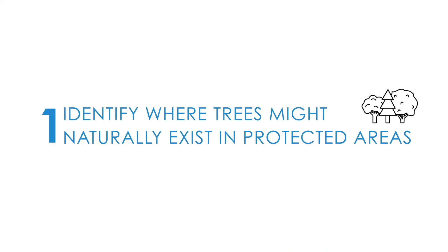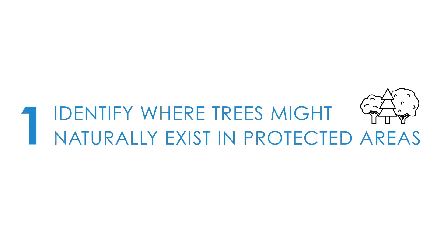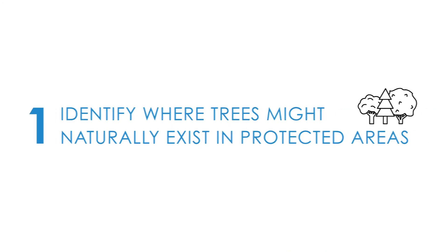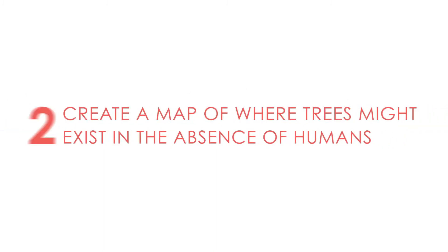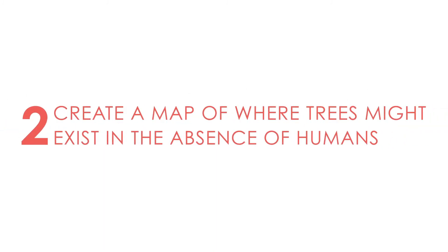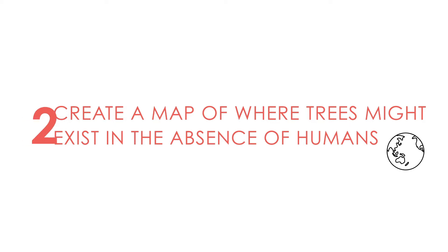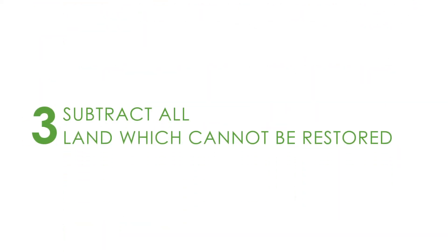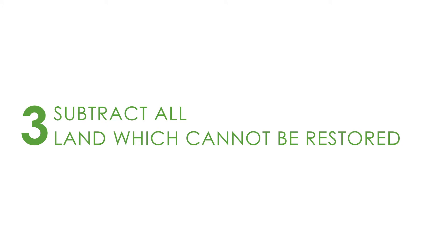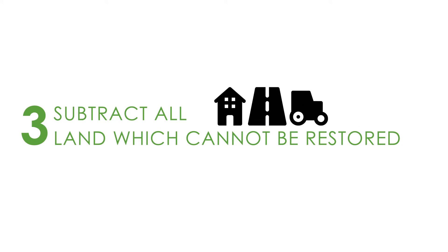Ultimately, it's a three-step process. First, we identify where trees might naturally exist in the protected areas. By characterizing those ecosystems, we generate a global map of where trees could potentially exist in the absence of humans. And then, ultimately, we subtract away the areas that we cannot restore — like urban land and agricultural land — leaving us with a map of where trees could potentially be restored around the world.